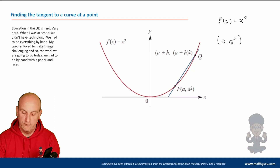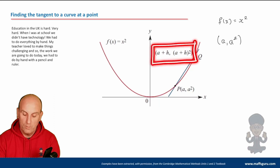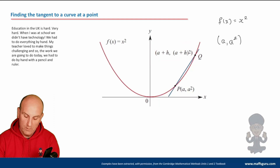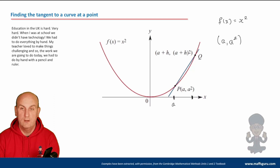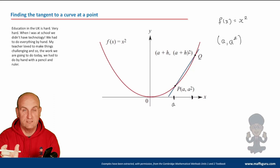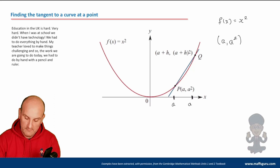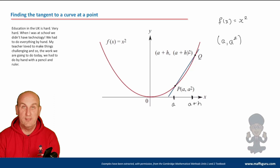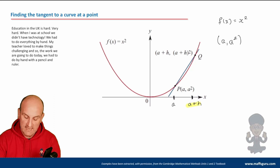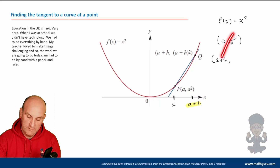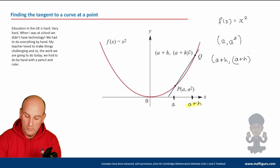This trick is used extensively in Methods 3 and 4 as well. The next thing to look at is the A plus H notation. If this coordinate here is A, and I'm moving to coordinate Q by adding some horizontal distance H, then that X coordinate becomes A plus H. If we now know we have a new X coordinate as A plus H, how do I find my Y value? I substitute it in — putting A plus H in place of X — giving me (A + H) all squared.